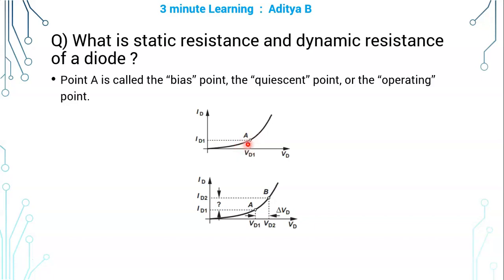That is V by I, VD1 by ID1, gives the static resistance, which is the resistance offered by that diode at that point for that VD1, ID1 pair.